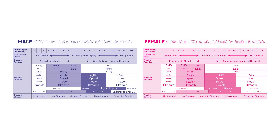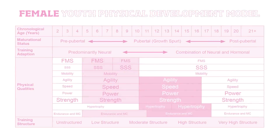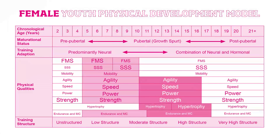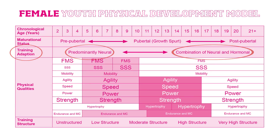If we use maturational status along with chronological age as a guide to developmental stage, it helps us tailor training to each individual child. Training adaptation refers to the child's response to training and the changes it creates in them. Before puberty those changes will be largely neural; as puberty advances they'll be both neural and hormonal. The physical qualities section of the model is the most important — it's where we identify the specific training types to focus on and when. We'll look at it in more detail in the next section.